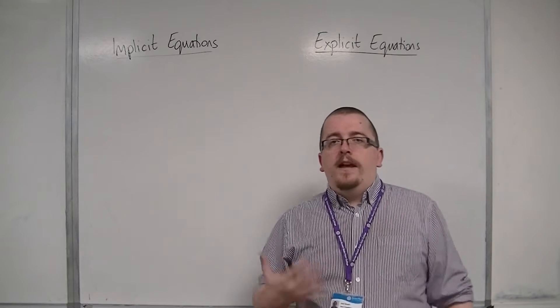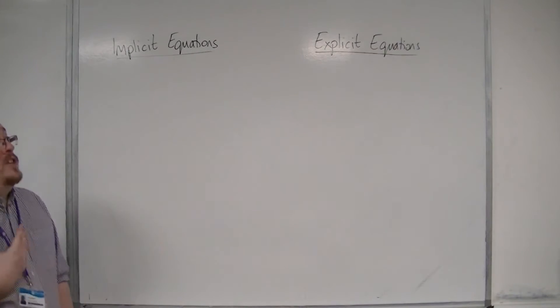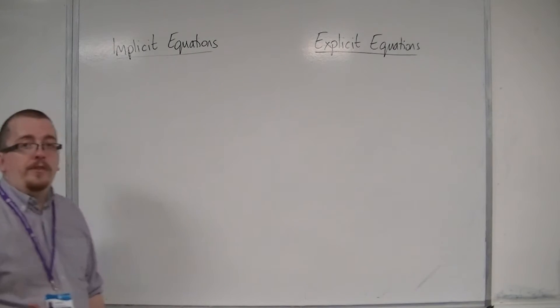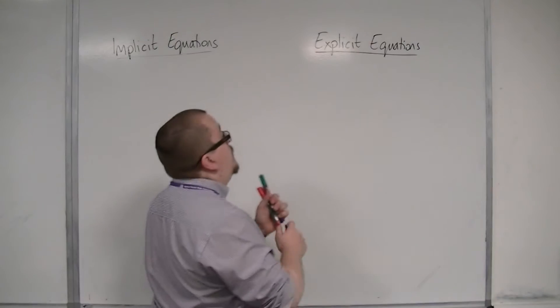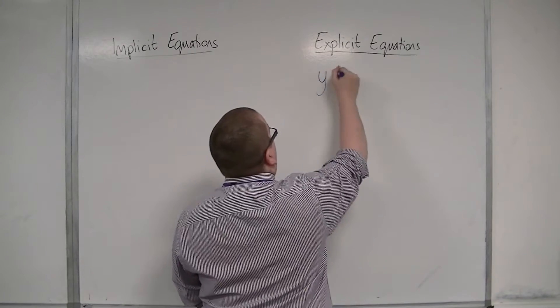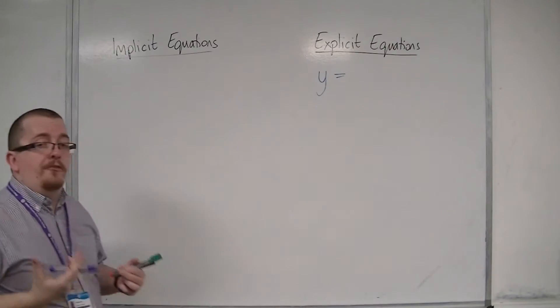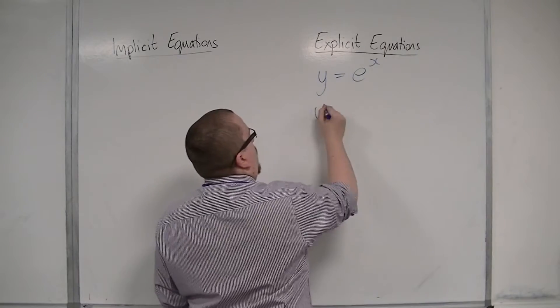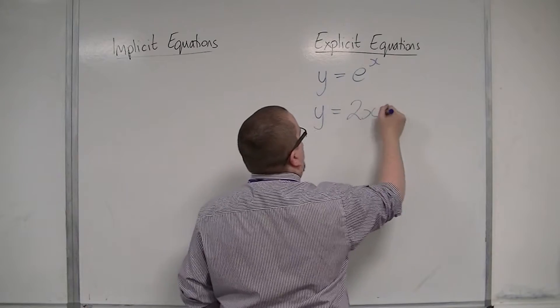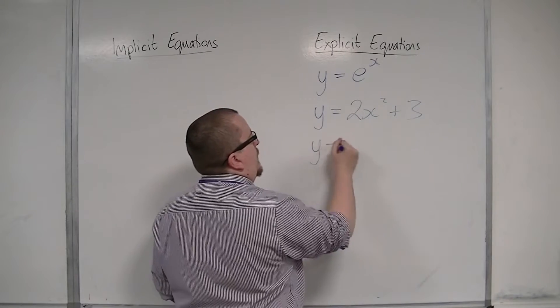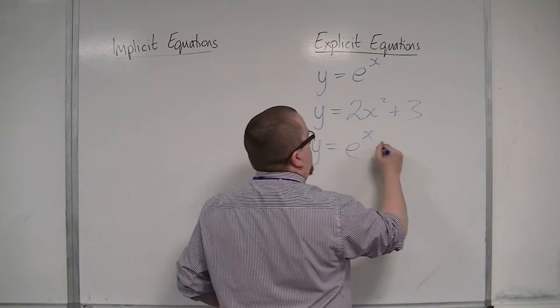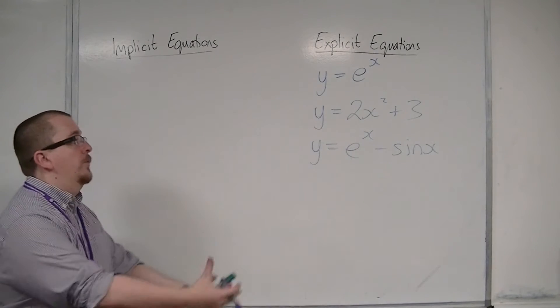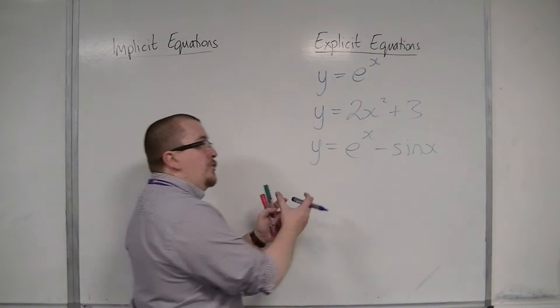Now, in the majority, the equations that you're used to will be known as explicit equations. So equations where you have y is equal to some function of x. So e^x, for example, or y = 2x² + 3, or y = e^x - sin x. So we could have a couple of functions of x, but it's still y equals some functions of x.